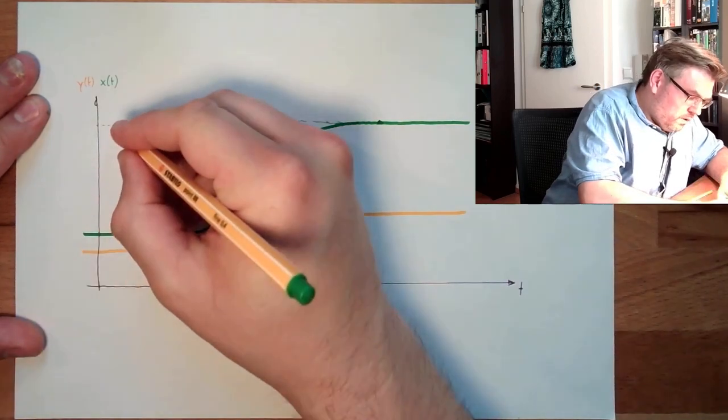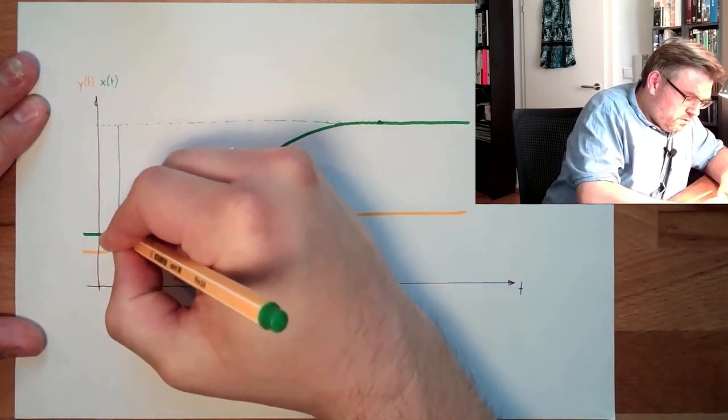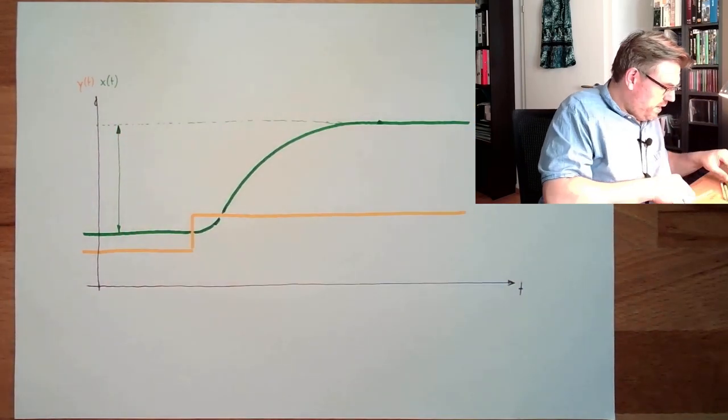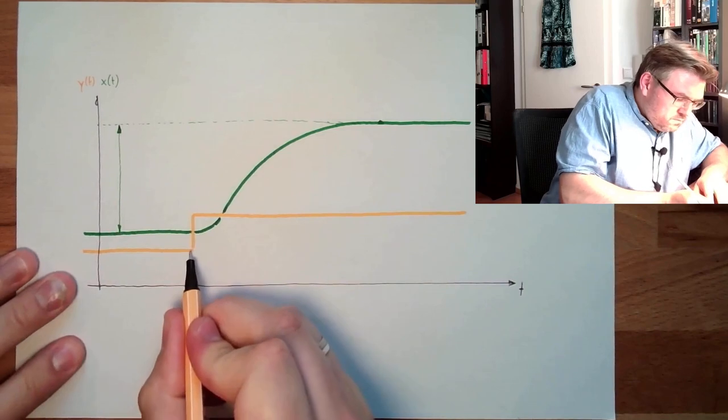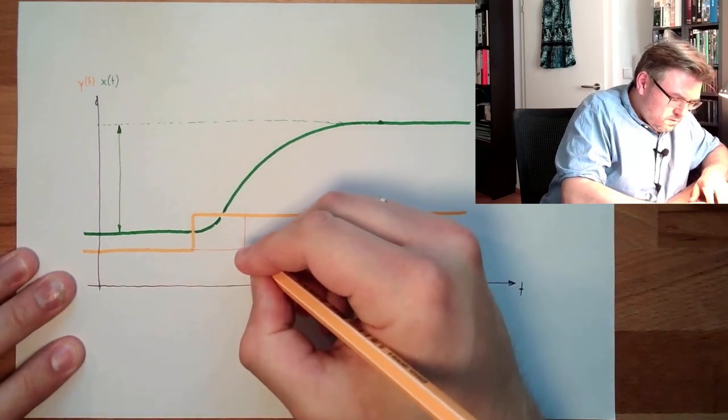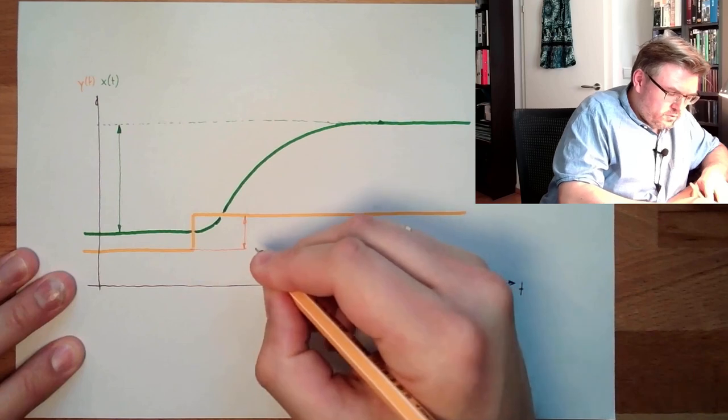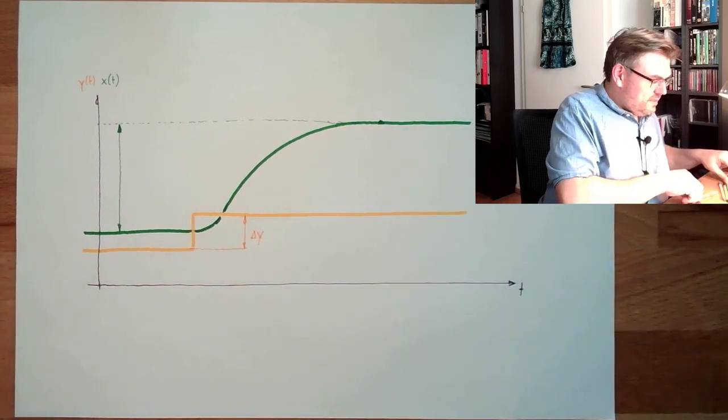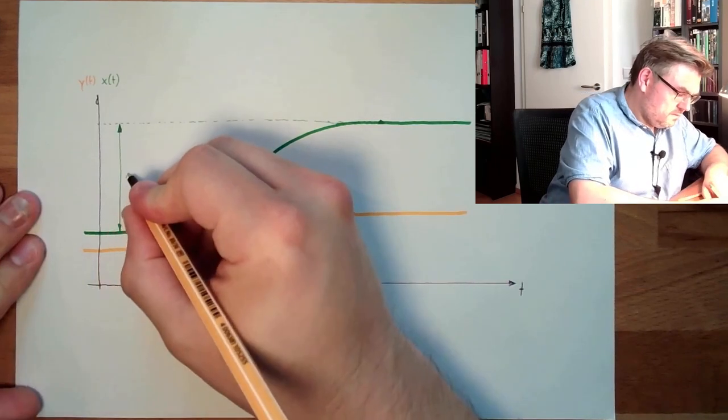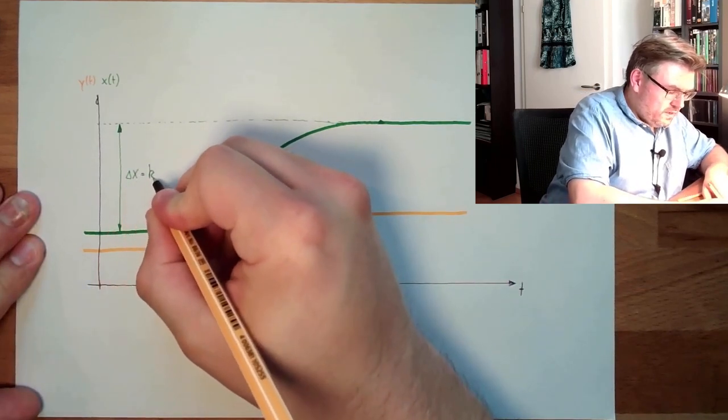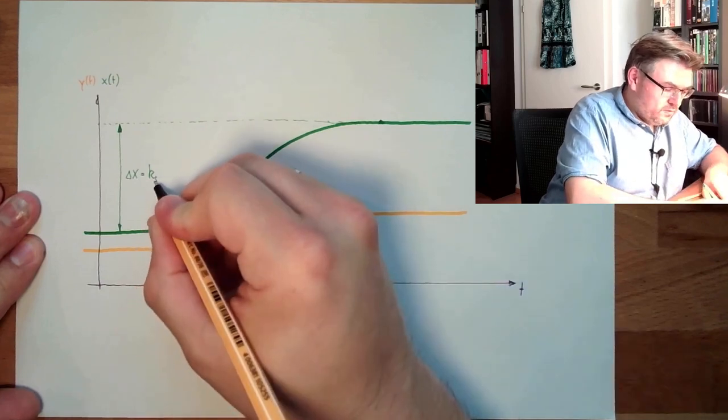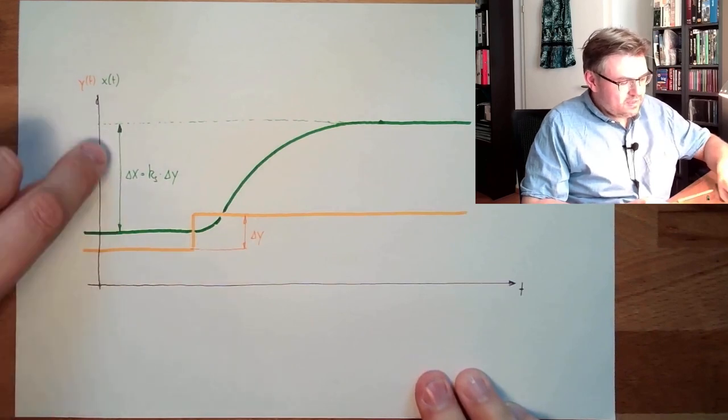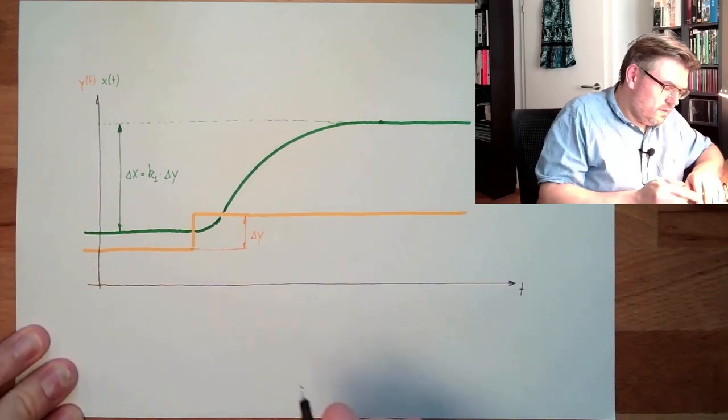We have the new stable value which is corresponding to the new value of the correcting variable, and we have the old one. So here we have a certain movement, and also here we made a certain change, delta Y. And this delta X here is actually the gain factor of the system multiplied by delta Y.